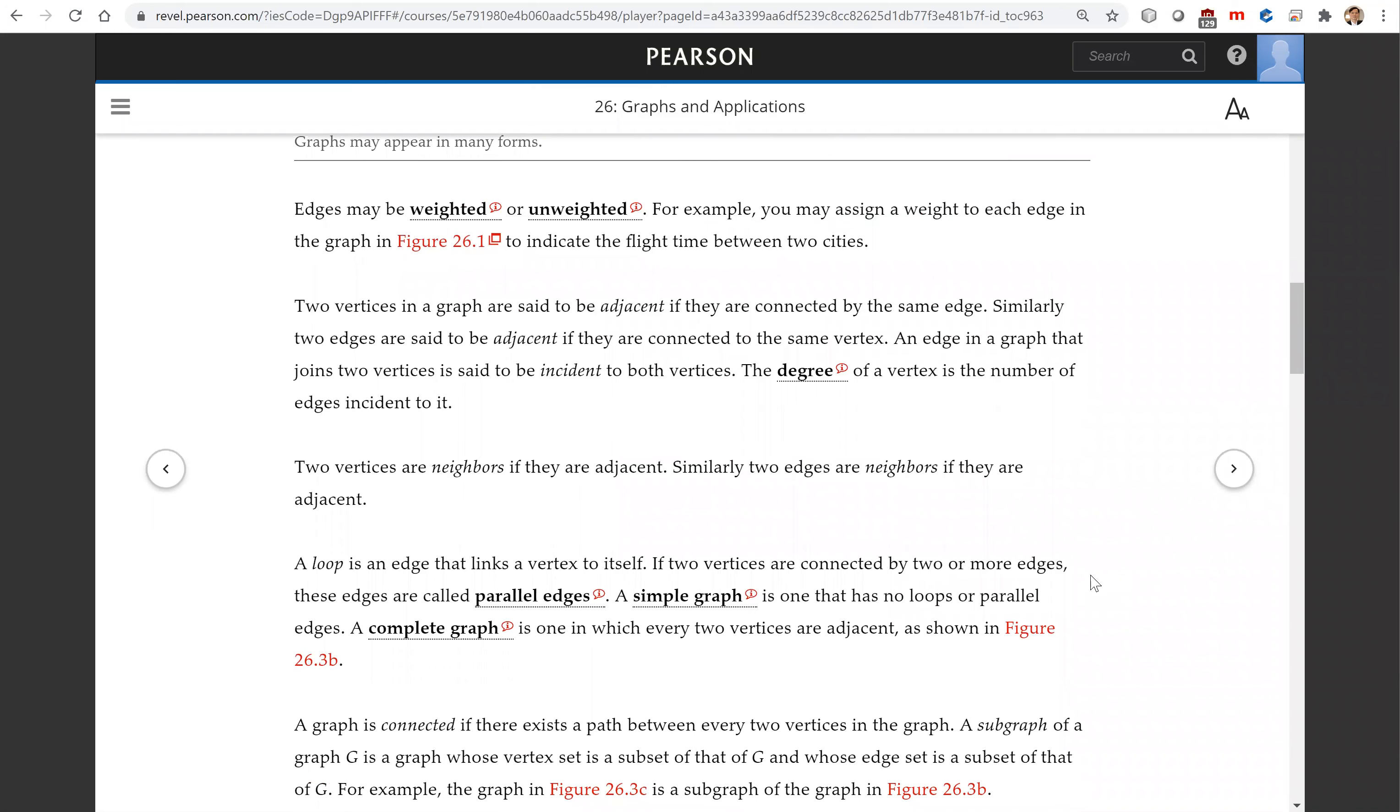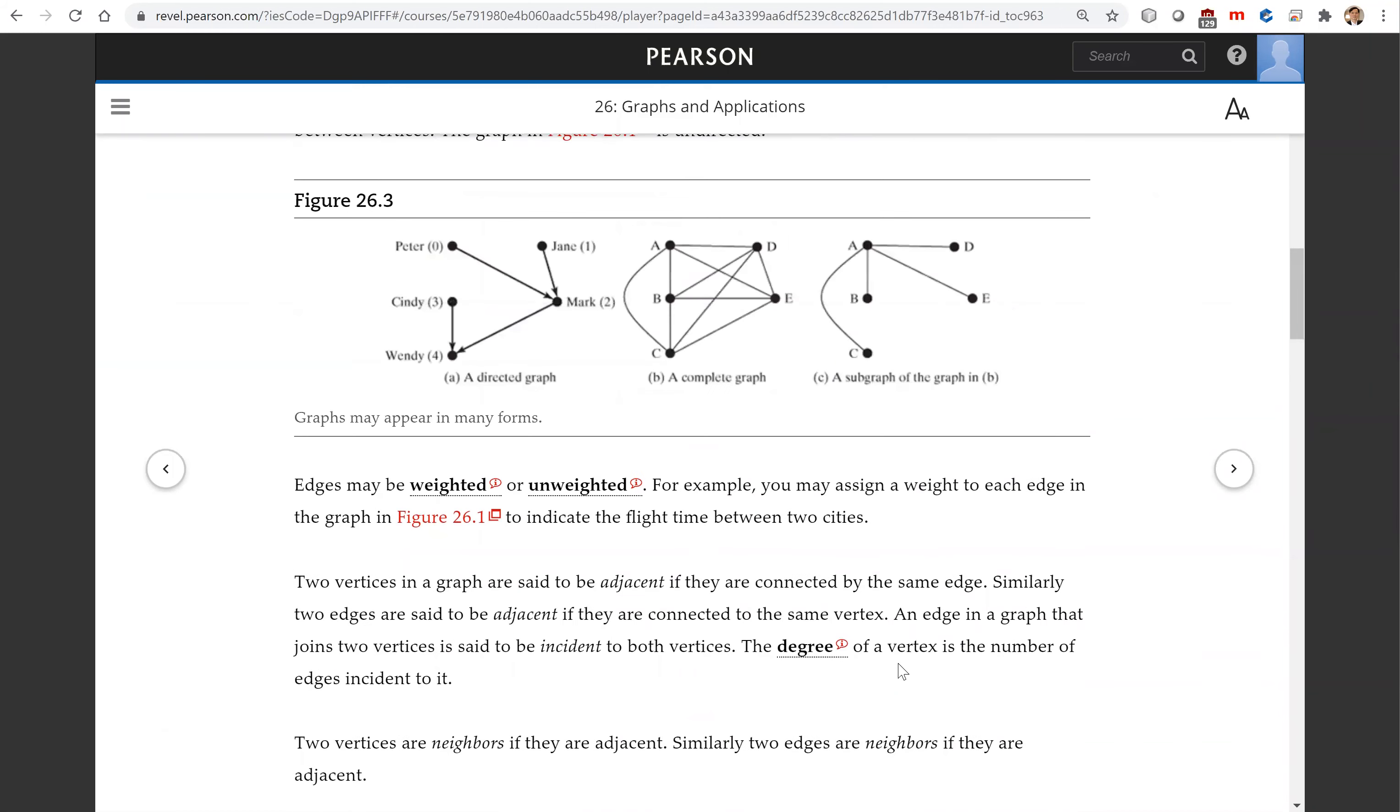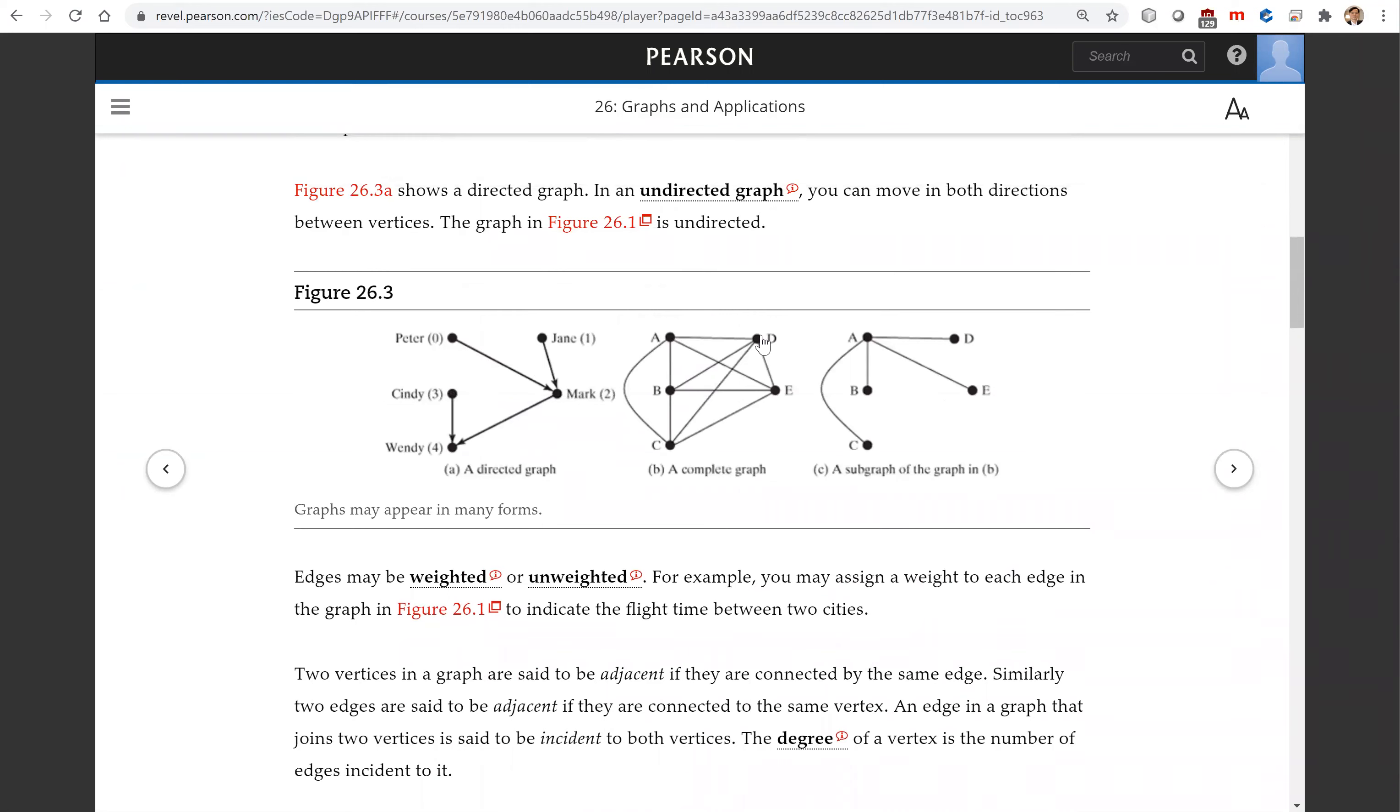Two vertices in a graph are said to be adjacent if they are connected by the same edge. So here A and D are adjacent. A and E are adjacent because they're connected by the same edge.